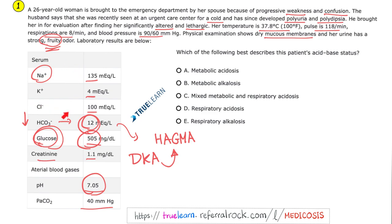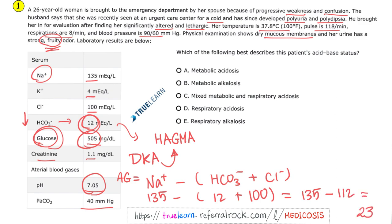Are we sure that the anion gap is high? Let's check. Give me the cations on one side minus the anions. This is my bicarbonate and my chloride. What's my sodium here? 135. And what's my bicarbonate? 12. How about serum chloride? That will be 100. Therefore, my anion gap is 135 minus 112. So the anion gap here is 23 milliequivalents per liter. Is this normal? High or low? Of course, this is high. The normal anion gap should be between 6 and 12.